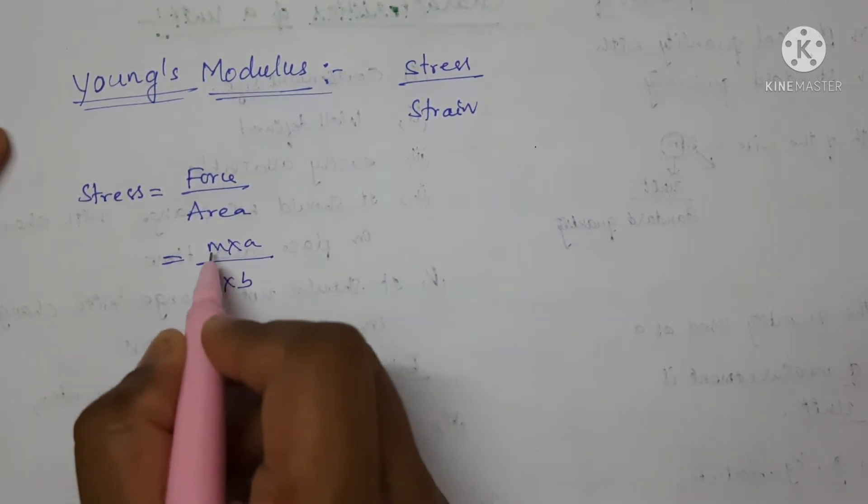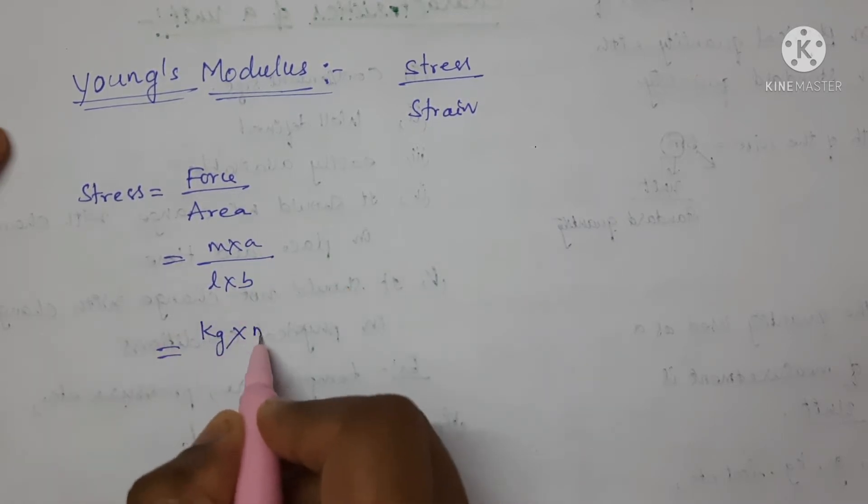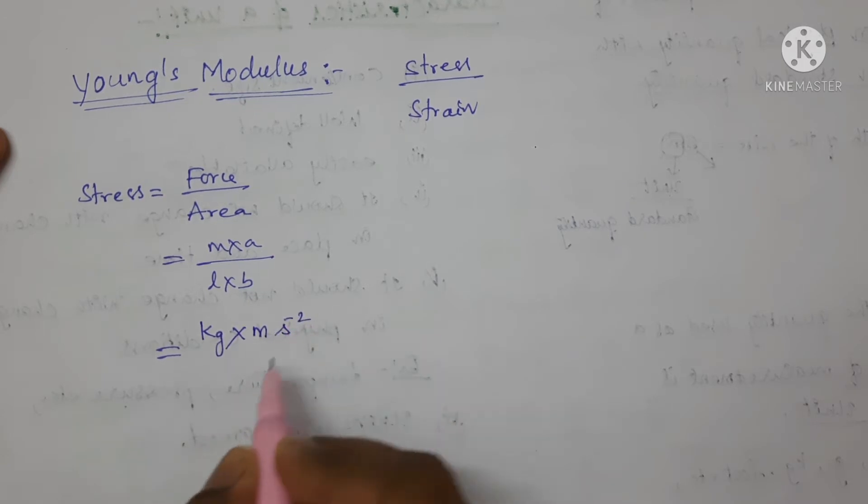Now, write the SI unit for each of the terms. For mass kilogram, for acceleration meter per second square, so m into s to the power of minus 2. For length meter and for breadth meter.